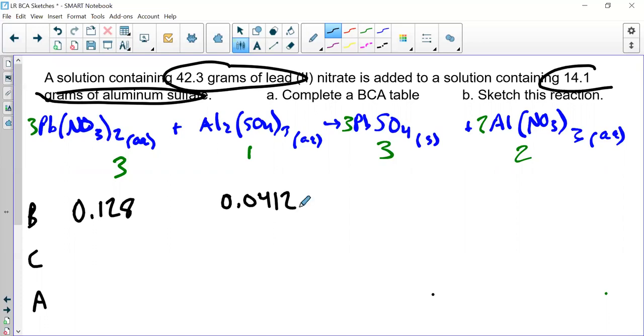How much of these products do we have before the reaction takes place? We have none. C is change, which is how much of these reactants on the left are going to go away and how much of these products on the right are going to form. Next is finding the limiting reactant because that's the one that's going to be fully depleted. You take your moles divided by the coefficient. 0.0412 over 1 equals 0.0412, and 0.128 divided by 3 equals 0.0427. So 0.0412 is smaller, making that the limiting reactant.